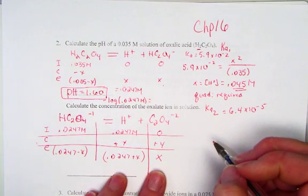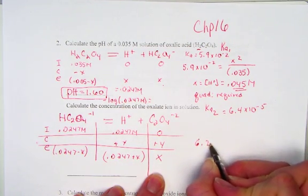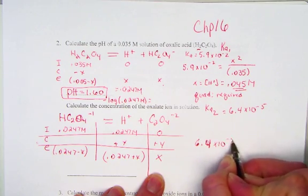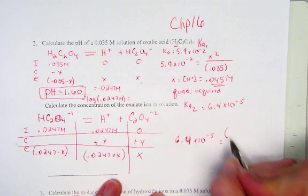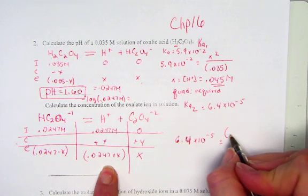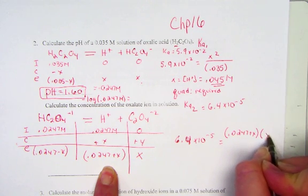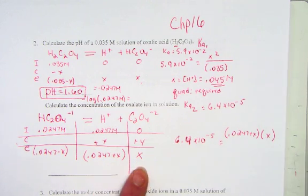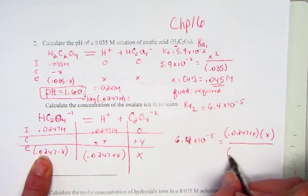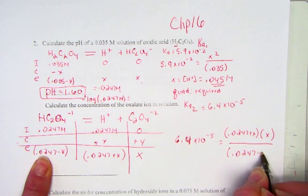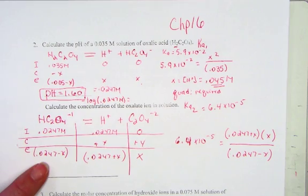Products get made, so we have a value of 0.0247 plus X representing the hydrogen, the value of X for oxalate, and 0.0247 minus X representing the equilibrium concentration of the hydrogen oxalate ion. Ka2 is our expression of products over reactants. Ka2 was found to be 6.4 times 10 to the negative fifth, set equal to the concentration of hydrogen ion 0.0247 plus X. X represents the concentration of oxalate set over 0.0247 minus X, the concentration of hydrogen oxalate at equilibrium.